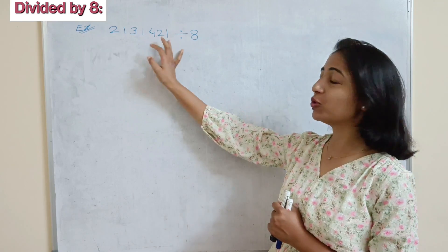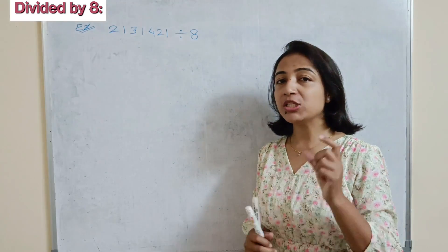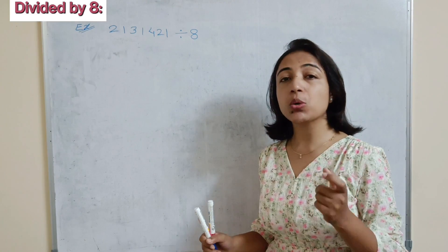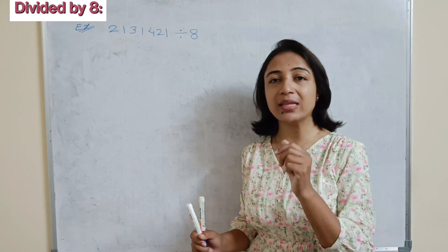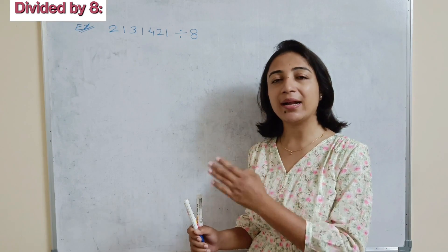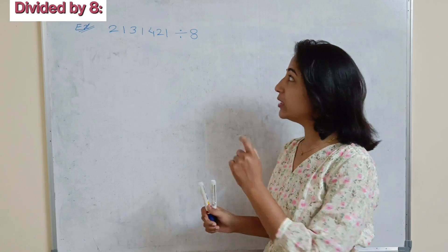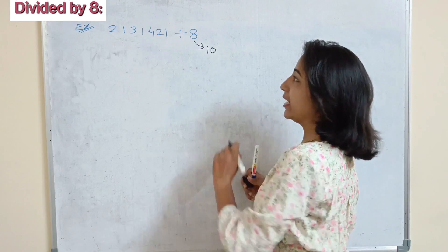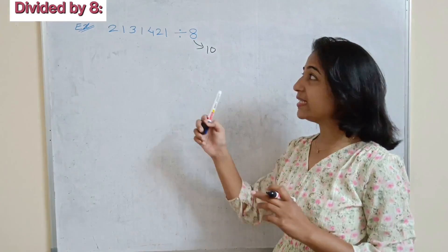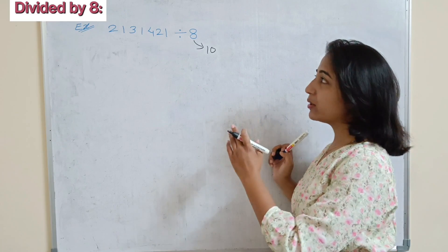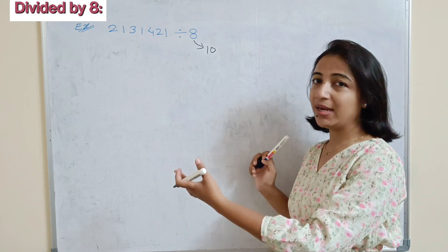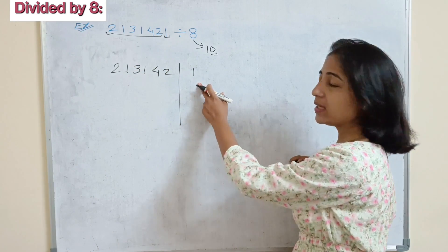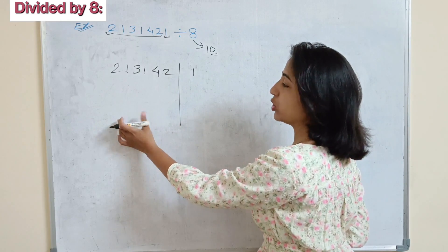Now if we divide 2131421 by 8 — first decide the base number. We are dividing by 8, so 8 is nearest to base 10, so our base is 10. Now break the number into two parts: right side single digit, remaining on the left side. So we get 213142 on the left and 1 on the right. The right is our remainder part and the left is our quotient part.